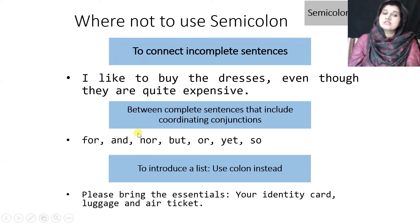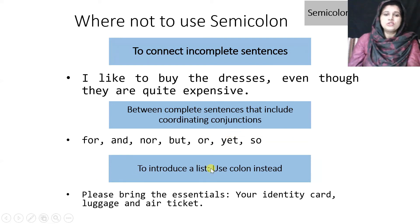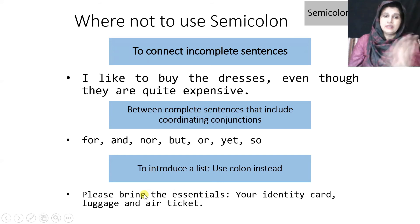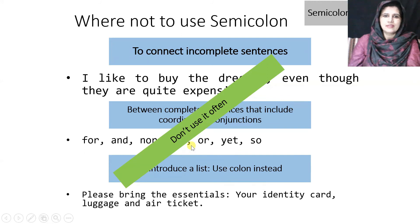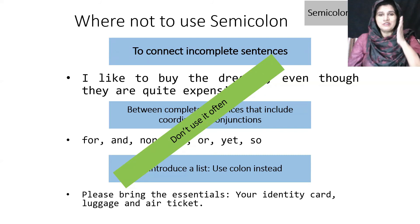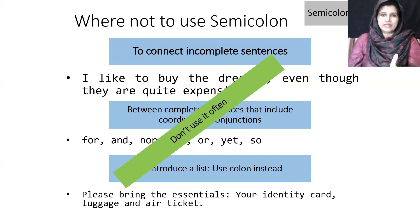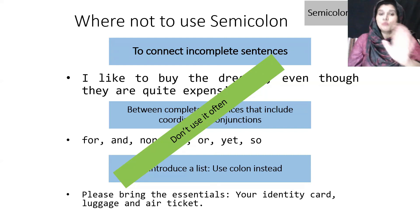We will either use a semicolon or a coordinating conjunction — not both together. Also, do not use a semicolon to introduce a list; use a colon instead. For example: 'Please bring the essentials: your identity card, luggage, and air ticket.' One more important thing: don't use semicolon too often. It is a precious punctuation mark, and using it frequently can lose its worth. In a five-paragraph essay, use it once per paragraph — not more.